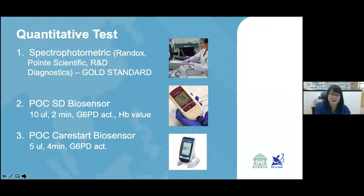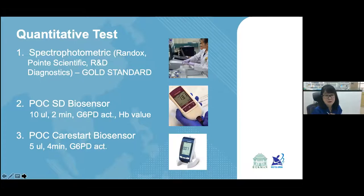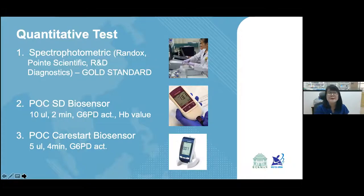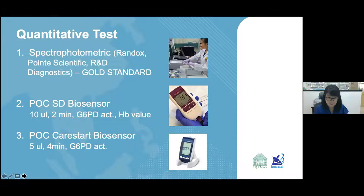Point-of-care quantitative tests are needed because rural malaria-endemic areas cannot access lab-based tests. Two are available: the SD Biosensor, which requires 10 microliters of blood and gives results in 2 minutes including hemoglobin measurement, and the CareStart Biosensor, which requires only 5 microliters but takes 4 minutes and gives only G6PD activity, requiring a separate HemoCue for hemoglobin to calculate normalized G6PD activity.